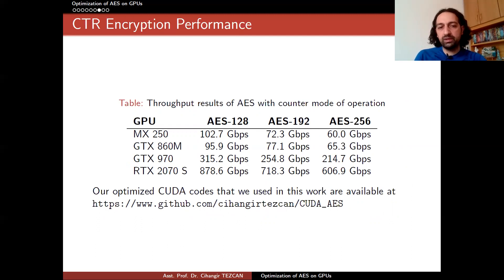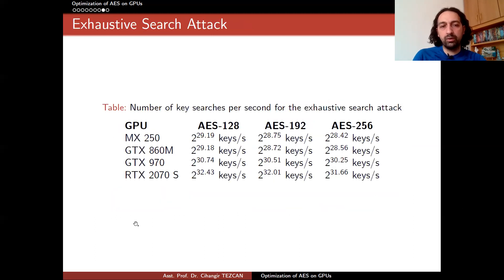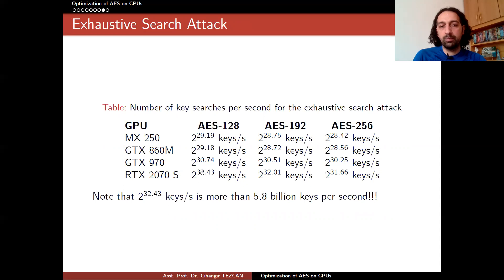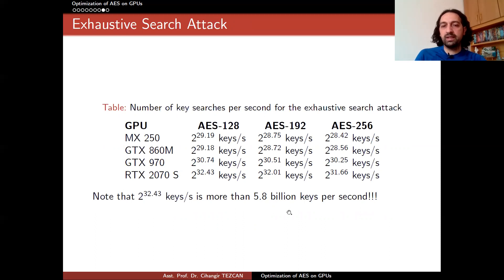Finally, in our optimizations we modified our kernels. Instead of performing throughput benchmarking only, we also included the key schedule and adapted our kernel into an exhaustive search attack. With our best GPU, we can search more than 5.8 billion keys per second. We compared our results with previous FPGA clusters and observed that our optimizations are better than them.